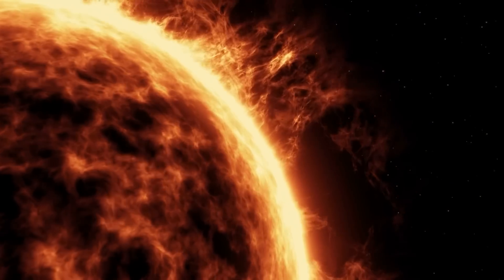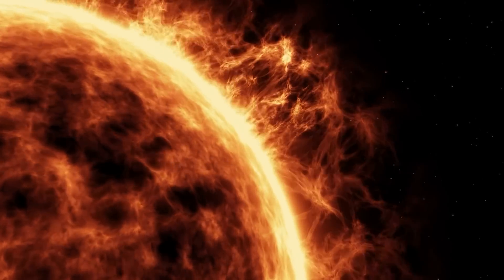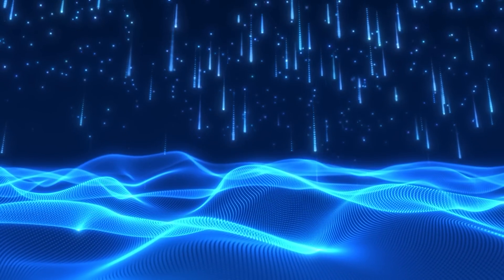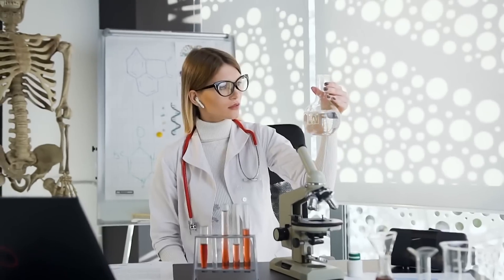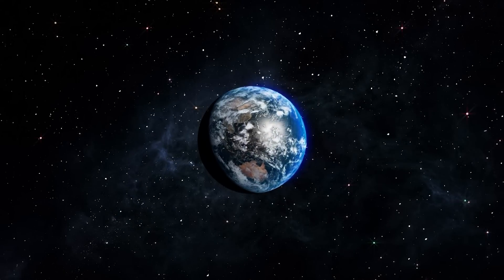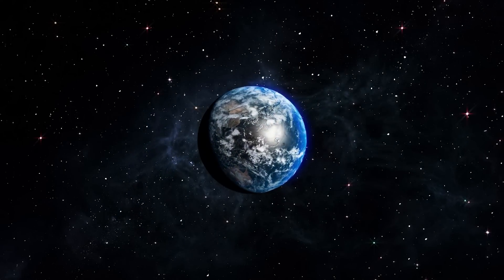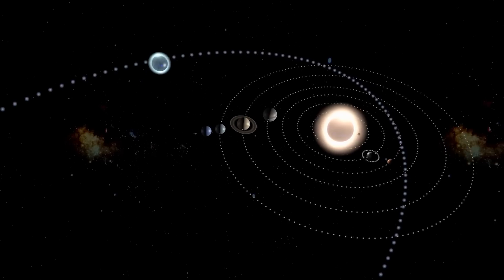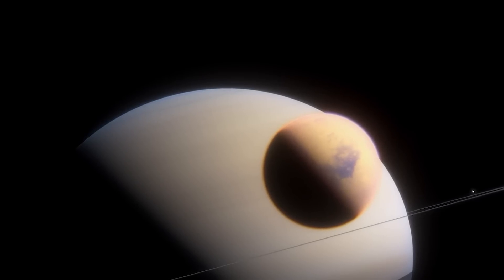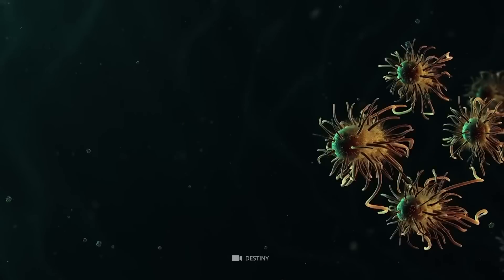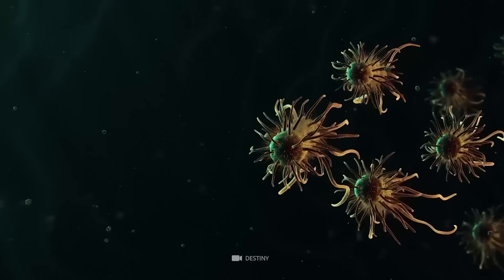The reactions are initiated by ultraviolet light from the Sun and create a range of organic compounds that eventually rain down onto the moon's surface. The discovery of such complex chemistry on Titan's surface provides important insights into the processes that occurred on early Earth and the potential for life to exist on other planets and moons in our solar system. It also highlights the need for further exploration of Titan, as it may hold important clues to understanding the origins of life in the universe.